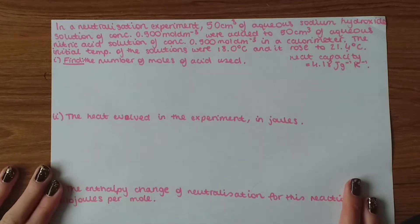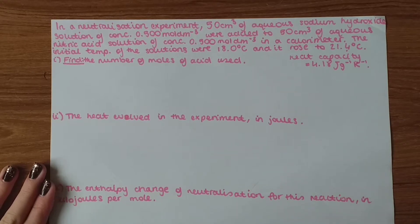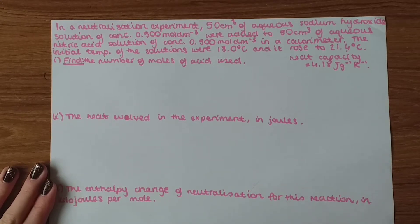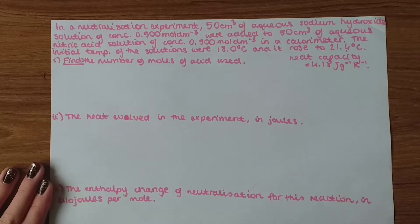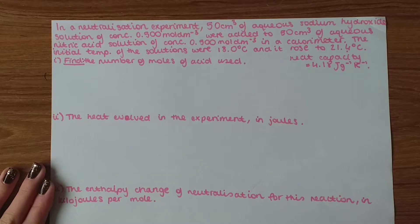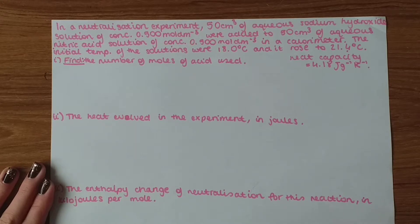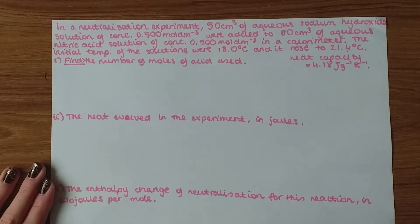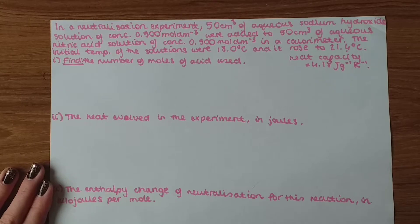The first question says: in a neutralization experiment, 50 cm³ of aqueous sodium hydroxide solution of concentration 0.5 mol dm⁻³ were added to 50 cm³ of aqueous nitric acid solution of concentration 0.5 mol dm⁻³ in a calorimeter. The initial temperature of the solutions was 18°C and it rose to 21.4°C.